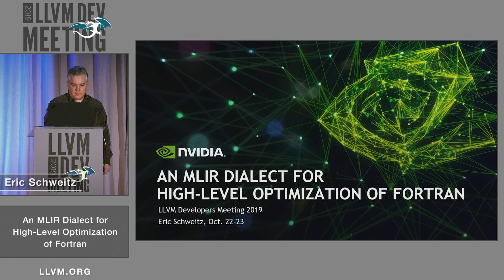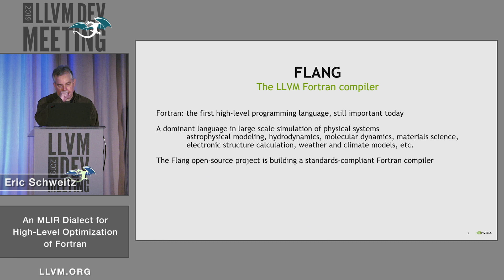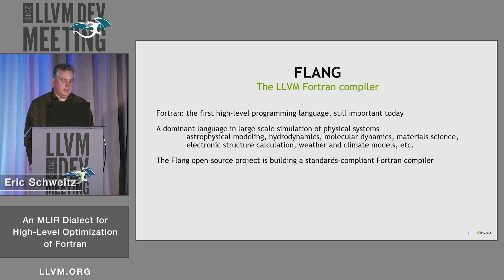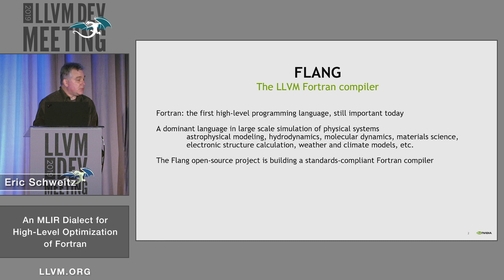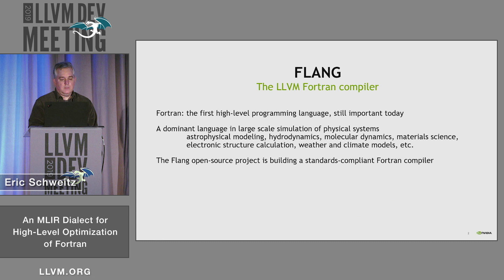Fortran — that's probably a language you would think your great-uncle Albert used to program his steam-driven abacus, but it's actually important today as well. It's the world's first high-level programming language. It's still used in physical systems, a lot of modeling applications such as weather modeling, climate models, and it's still an active language. There was a Fortran standard release last year, and the FLANG project is driving to create a compiler that will compile high-level Fortran 2018.